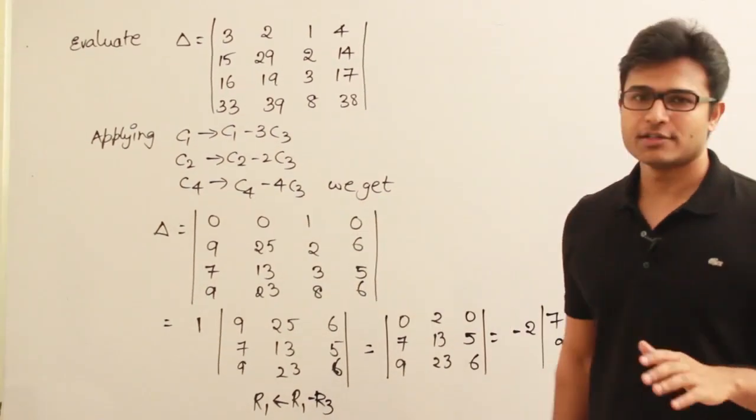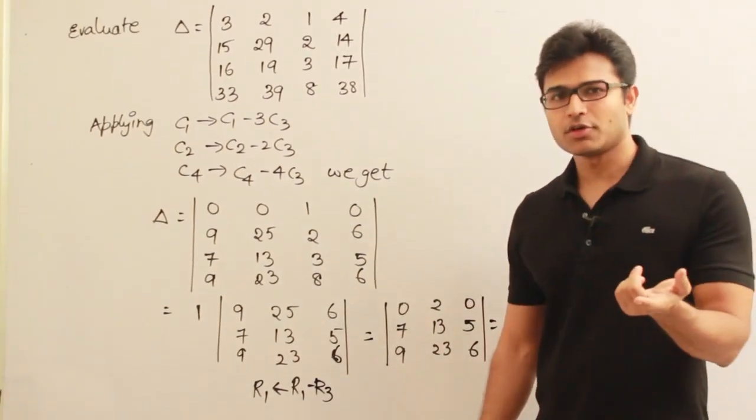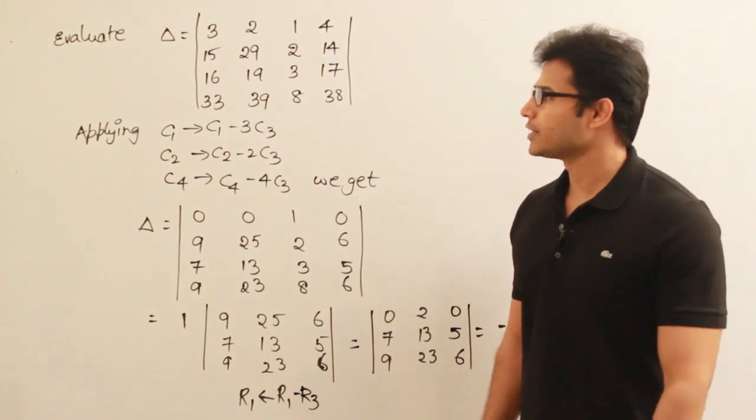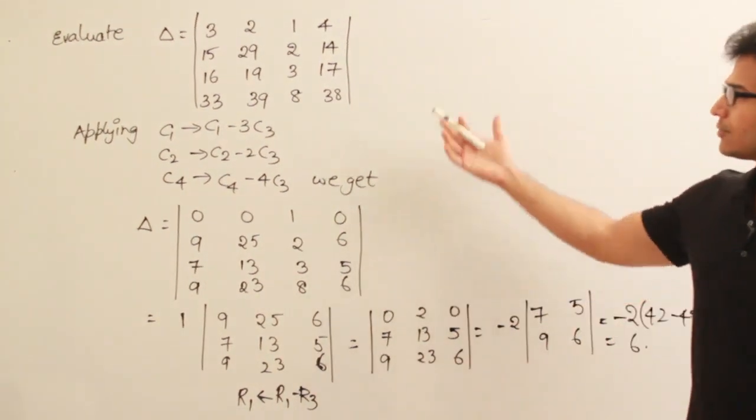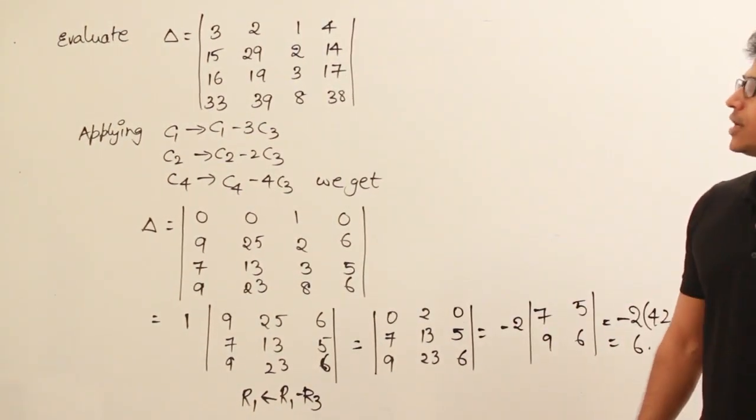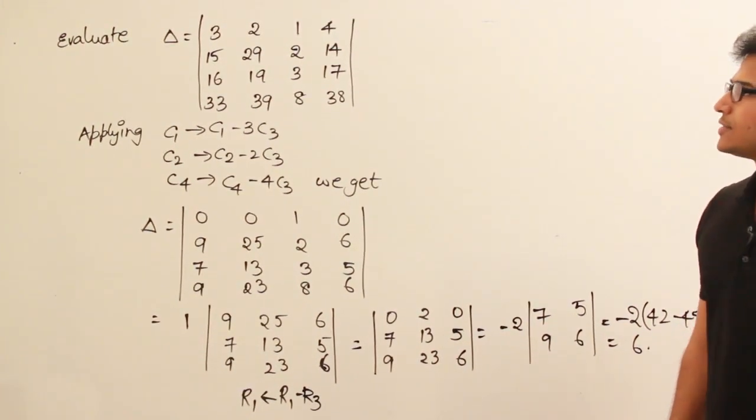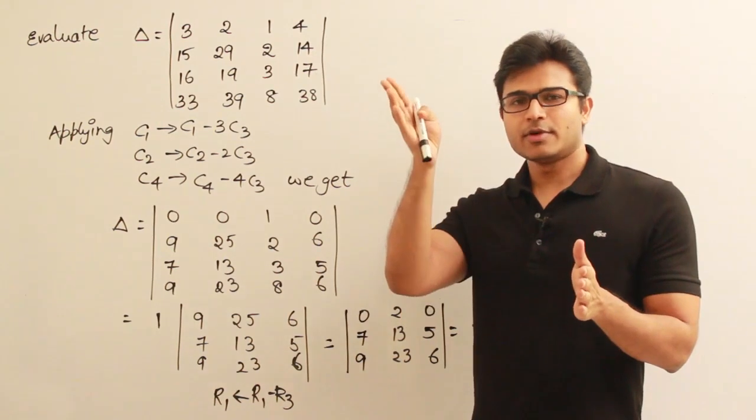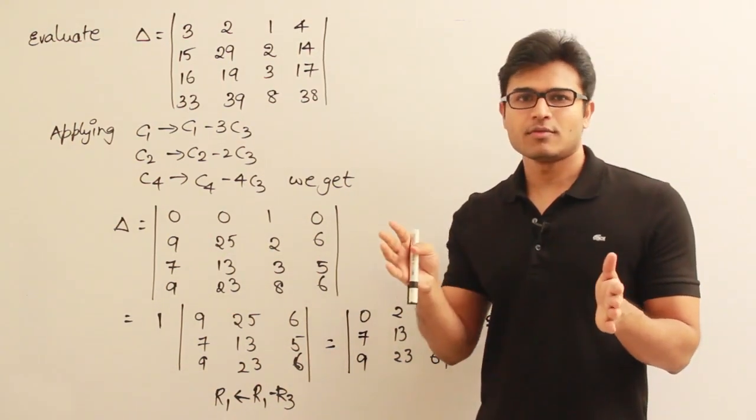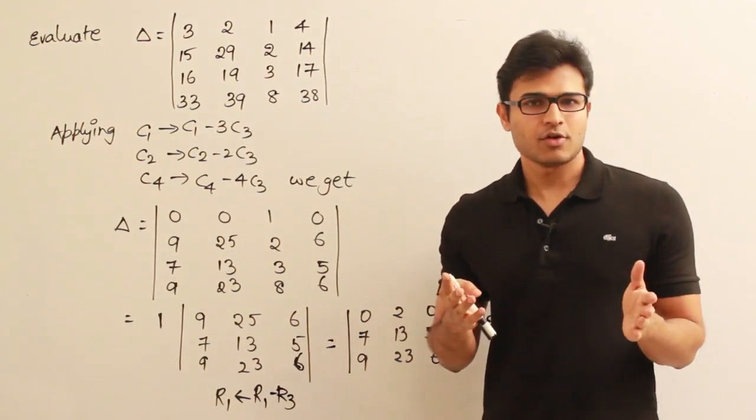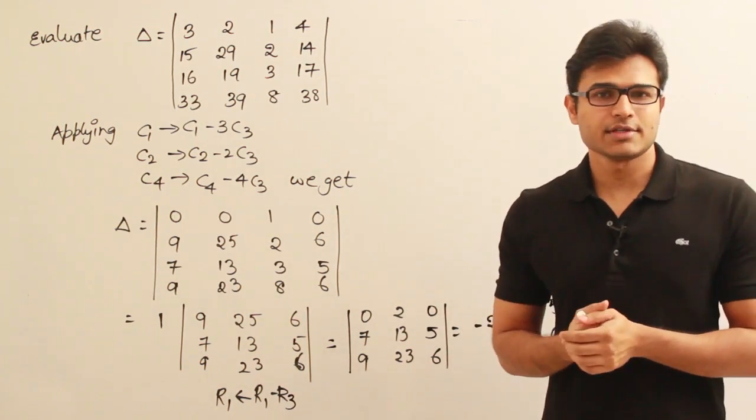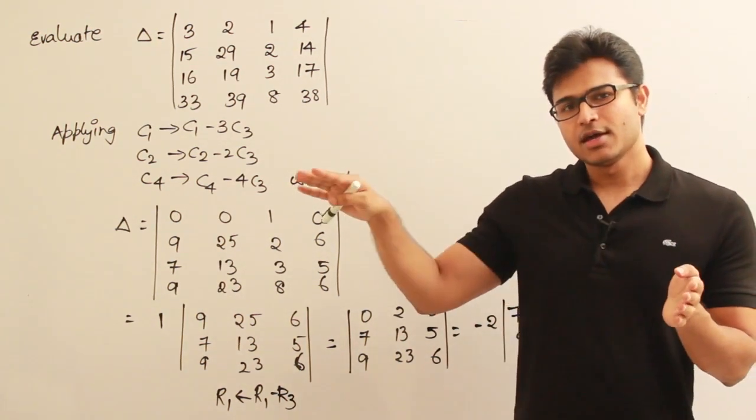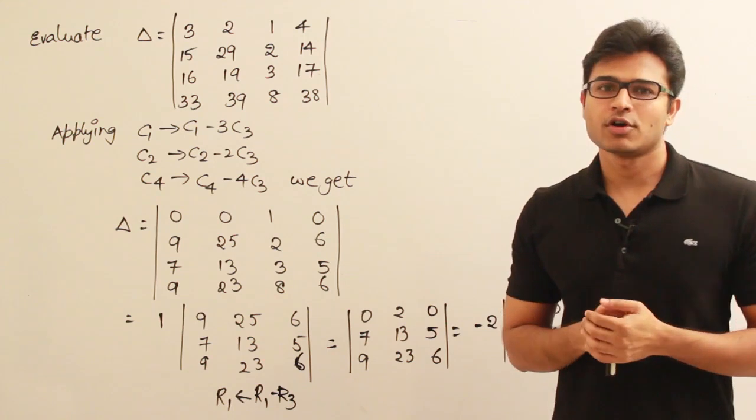It is just for the sake of example. I want to give you one model on how to solve it. Using this, we should continuously try to see that either all the elements of a row or all the elements of a column, or as many elements of a row and column, become zero. Then we can easily expand the determinant over that row or column after making it zeros.